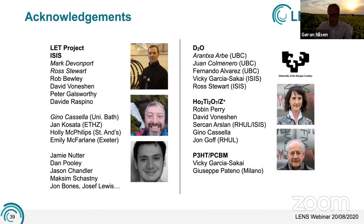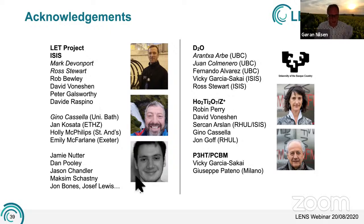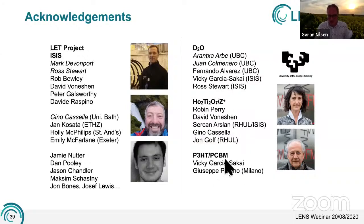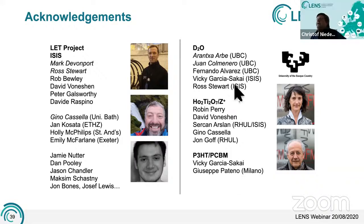Before concluding, thanks to collaborators: on the ISIS side, Mark Davenport, Ross Stewart, and the LET instrument scientists Rob Bewley and David Voneshen, along with engineers and detector scientists. Students working on the project were important too, with much of the work shown from Gino Casella and excellent technical support. The D2O project was done with Arantxa Arbe and Juan Colmenero at the University of the Basque Country. The holmium titanate work was done with Robin Perry, Sian Dutton, and David Voneshen at ISIS. The polymer work was done with Vicky Garcia and Giuseppe Paterno. Thank you very much for your attention.